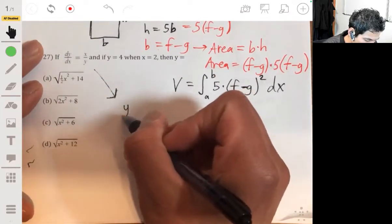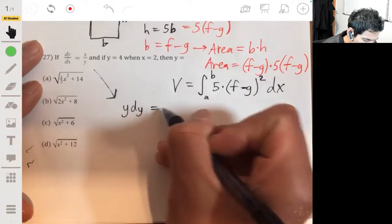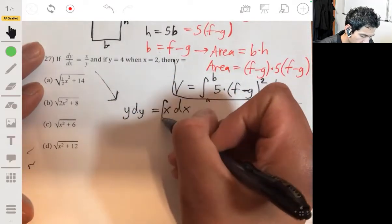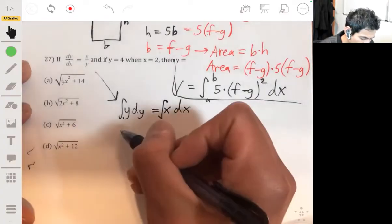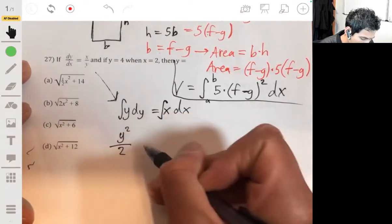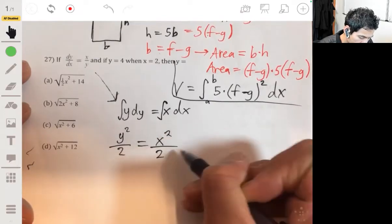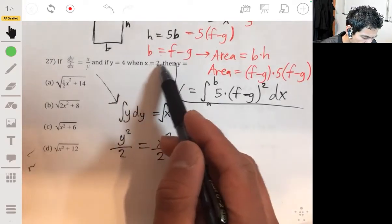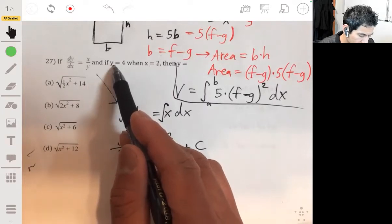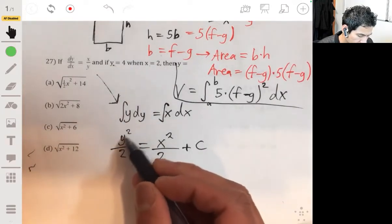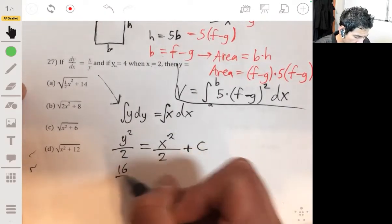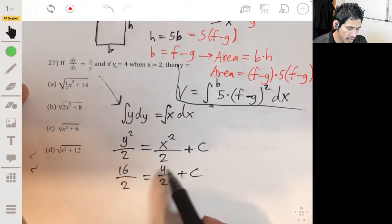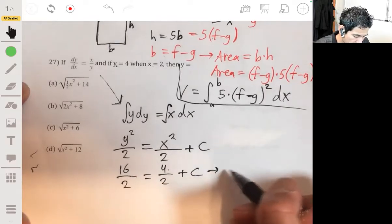We're going to bring the y's to the left. We have y times dy on the left and then bring the dx to the right. Then we integrate each side. After we integrate, we'll have y squared over 2 equals x squared over 2 plus our constant C. Let's solve for our constant C. We're given that y is 4 when x is 2. So when y is 4, we have 16 over 2 equals 4 over 2 plus C. So we have 8 equals 2 plus C, so C equals 6.